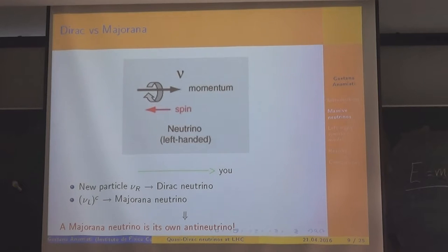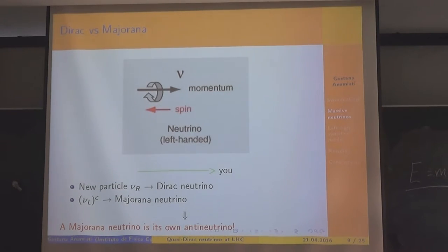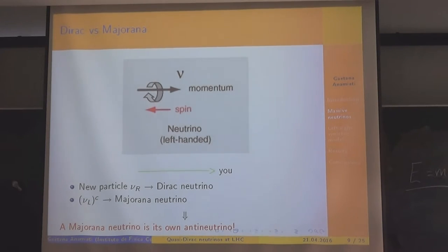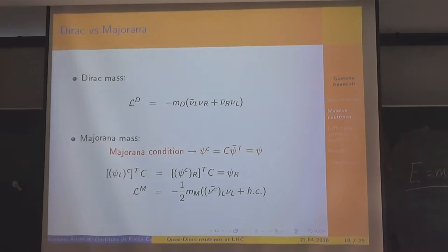If we postulate the existence of a right-handed neutrino and a left-handed antineutrino, we can say the observer sees a right-handed neutrino and the neutrino is a Dirac neutrino. But if we don't postulate those two other objects, we have another possibility: the neutrino is a Majorana neutrino. The important property of the Majorana neutrino is that it is its own antineutrino. From this you can understand why the lepton number is violated: if we assign lepton number +1 to particles and -1 to antiparticles, and the neutrino is its own antineutrino, the lepton number is violated. Here there is the Dirac mass term.